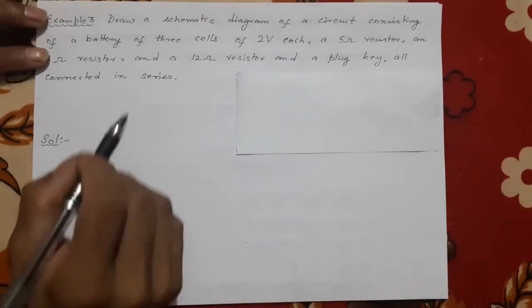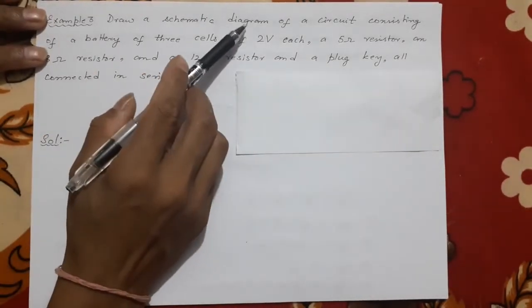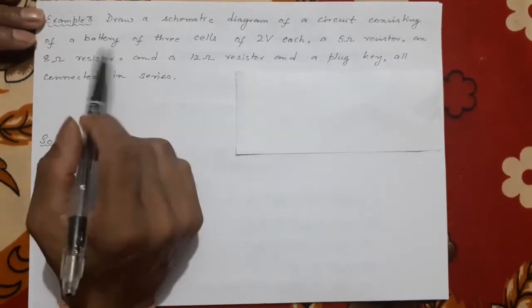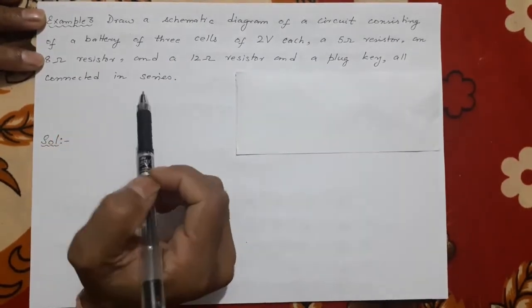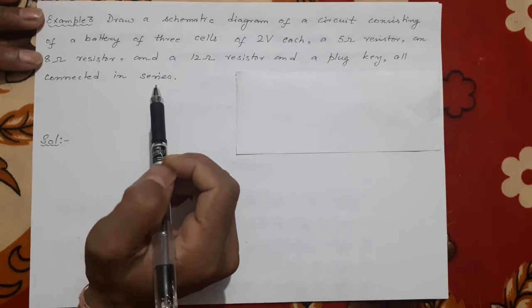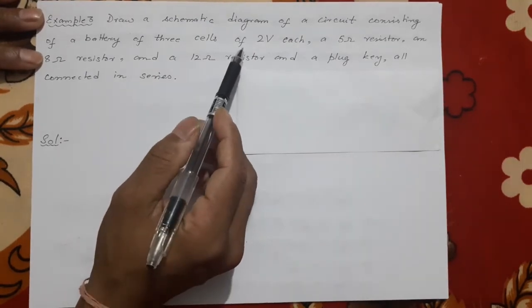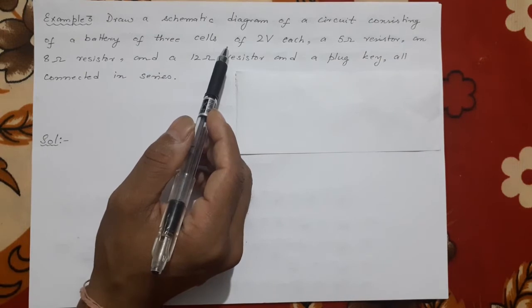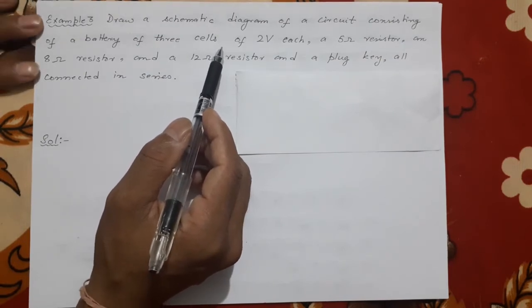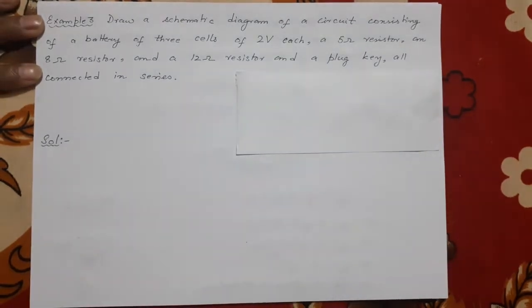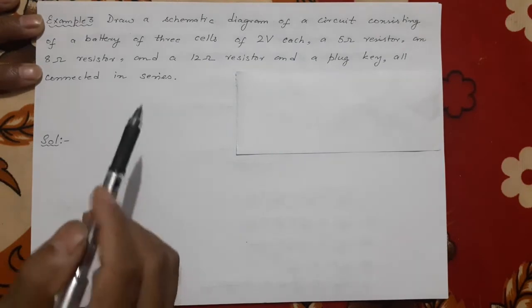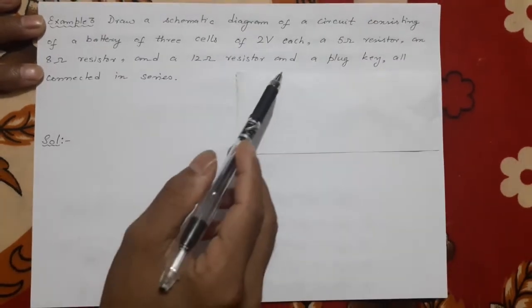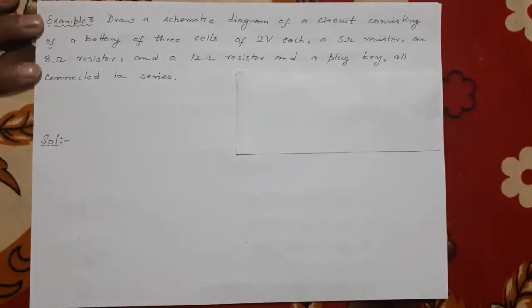This is question number three. It says draw a schematic diagram of a circuit consisting of a battery of three cells. Two voltage, you have not studied how the battery are combined but they are very easy, just like a torchlight battery, one to the other they will be added up. And a 5 ohm resistance and 8 ohm resistance and a 12 ohm resistance and a plug key all connected in series.